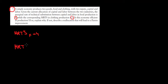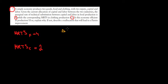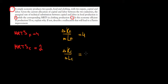Let's write this data. The marginal rate of technical substitution in food production equals 4, whereas the MRTS in clothing production equals 2. Recall that the MRTS between capital and labor is the exchange rate at which companies are willing to trade capital for labor while keeping production the same. So the change in capital for the food company relative to the change in labor equals 4, and for the clothing company it equals 2.